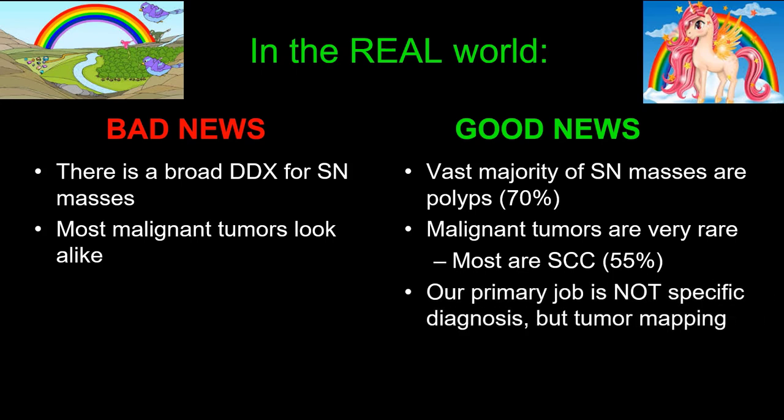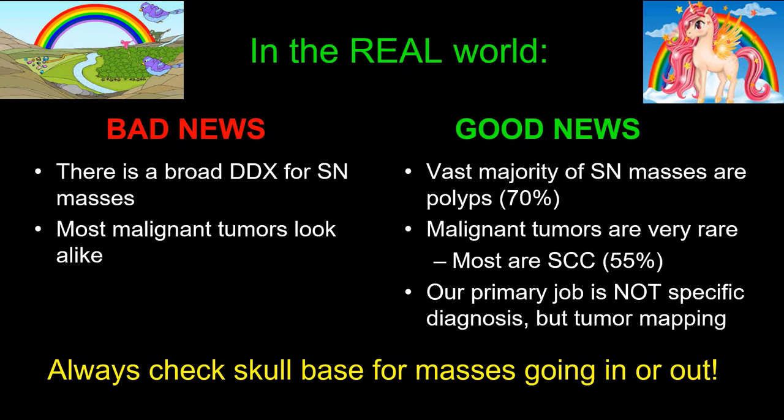Our role in the management of patients with sinonasal tumors is really not so much to make the specific diagnosis — there are pathologists that can do that. It's more about tumor mapping, both within the sinonasal cavity, distinguishing tumors from trapped secretions, but importantly looking for tumor extent outside of the sinonasal cavity to the facial soft tissues, orbit, and through the skull base. We must check the skull base for masses going in like cephaloceles, but even more commonly masses going out like aggressive sinonasal tumors.